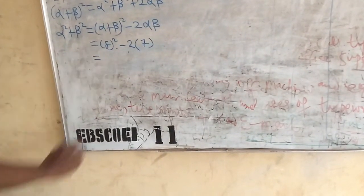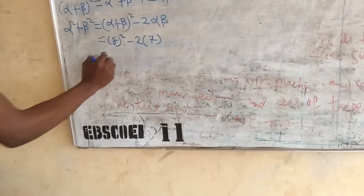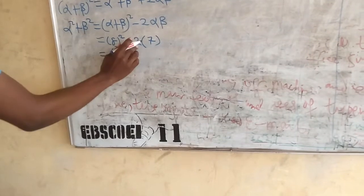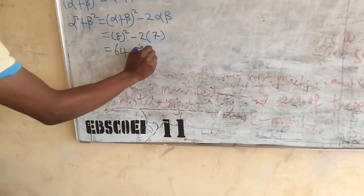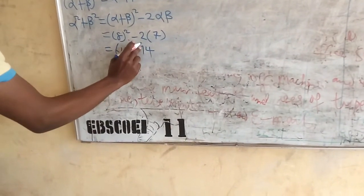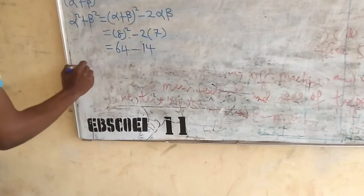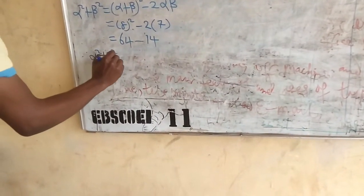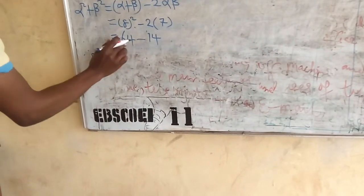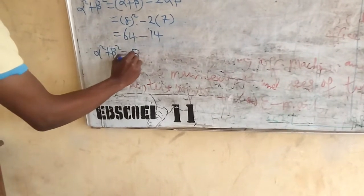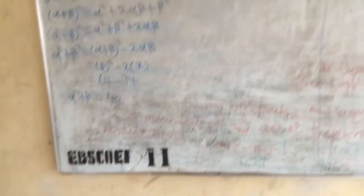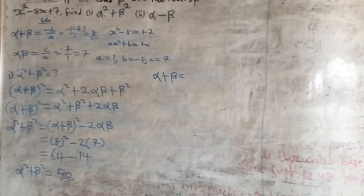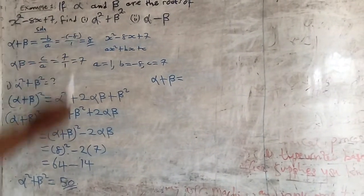Now substituting, we have 8 squared minus 2 times 7. This is equal to 64 minus 14, which is 50. Therefore, alpha squared plus beta squared is equal to 50. That's the answer for part (i).